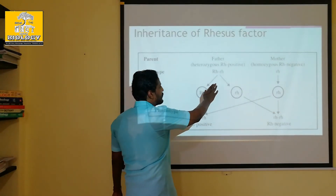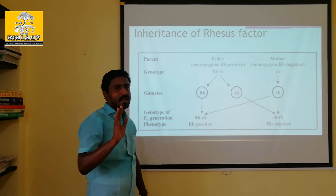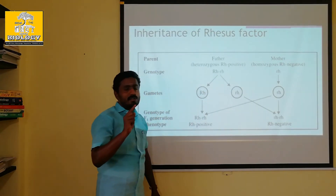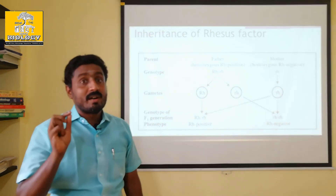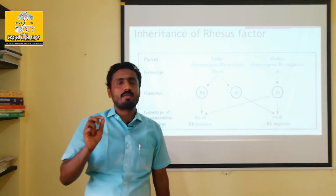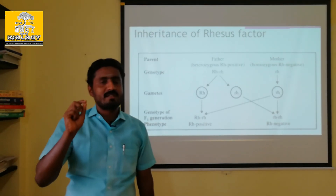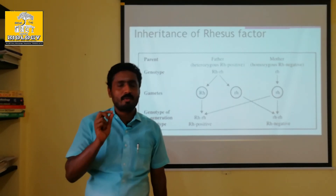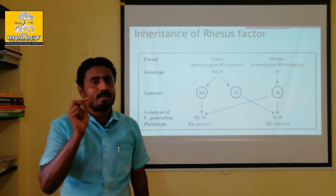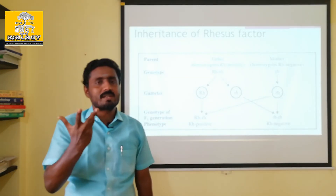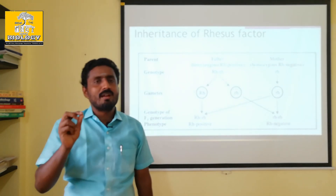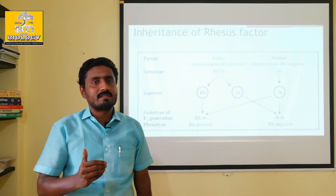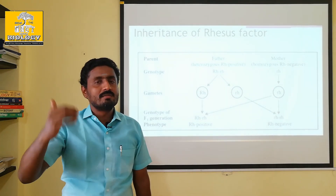In the RH factor, capital R and small r represent different alleles. Positive blood group can be in a homozygous condition — capital R, capital R — or heterozygous condition — capital R, small r. Both capital R capital R and capital R small r result in RH positive blood group.